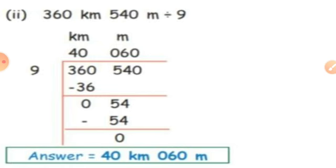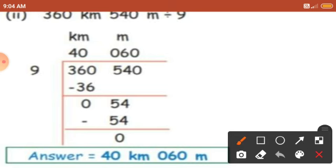Let's see another sum: 360 kilometer 540 meter divided by 9. First we have to write the units — one is kilometer and another one is meter. After that write the dividend: 360 is in the kilometers place, so write 360 there. Next, 540 in the meters place, so write 540 in the meters place. The divisor is 9.